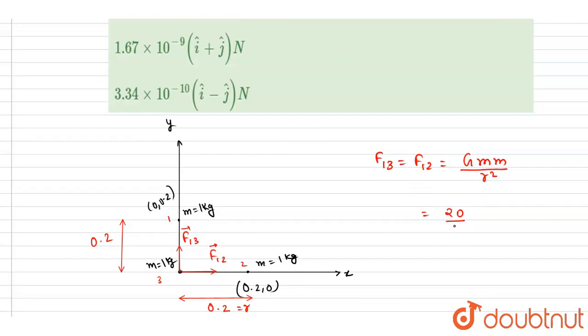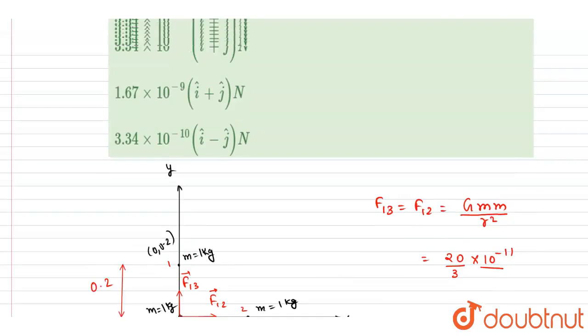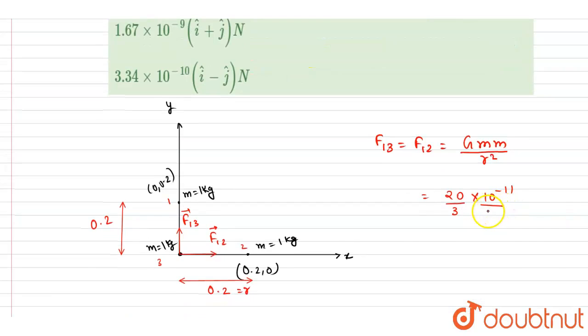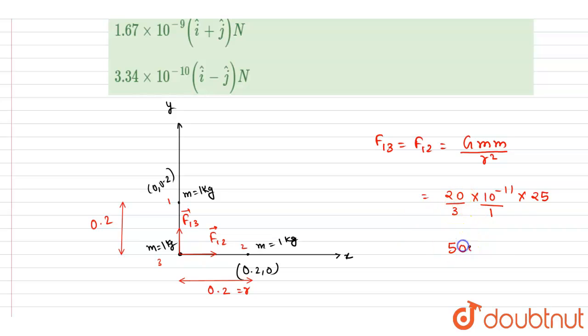It will be (20/3) × 10⁻¹¹, mass is 1 kg, distance is 0.2 meter. So 0.2 is 1/5, so (1/5)² is 1/25. So this will be the expression. This is 500/3 × 10⁻¹¹.